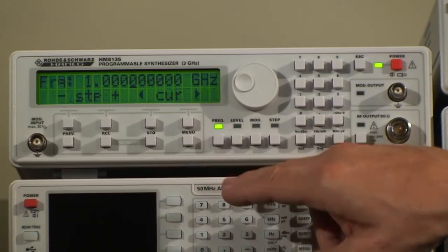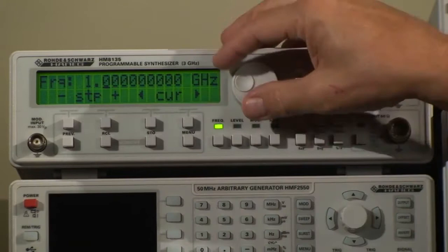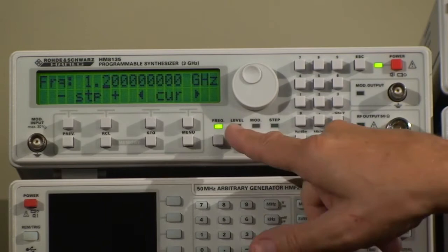Very straightforward. Press the frequency button, and now you have cursors moving back and forth here. If I want to set the frequency 1.2 gigahertz, that's what I'm doing.